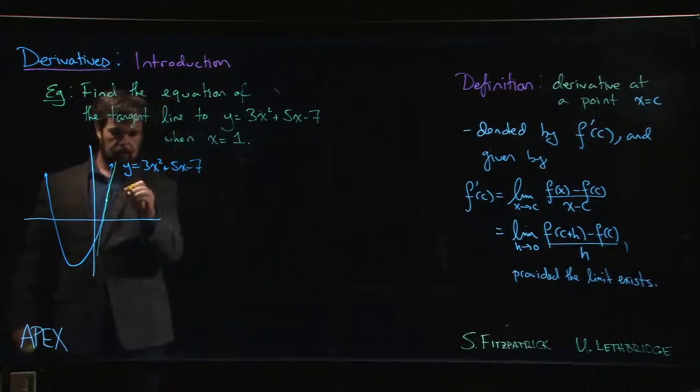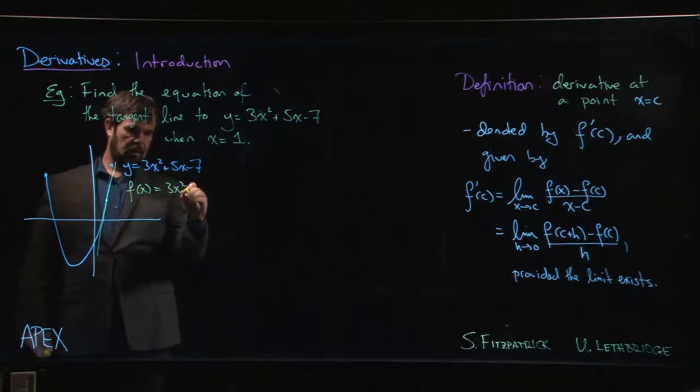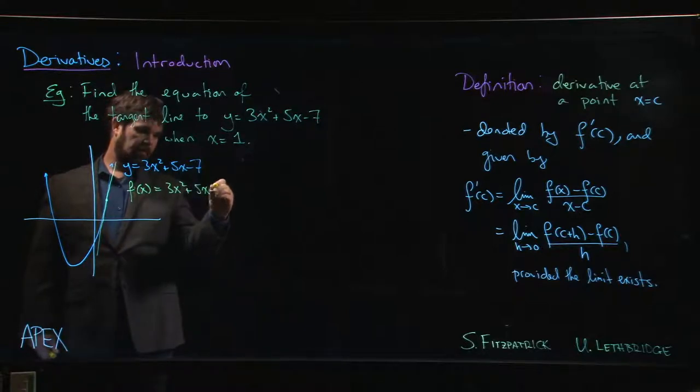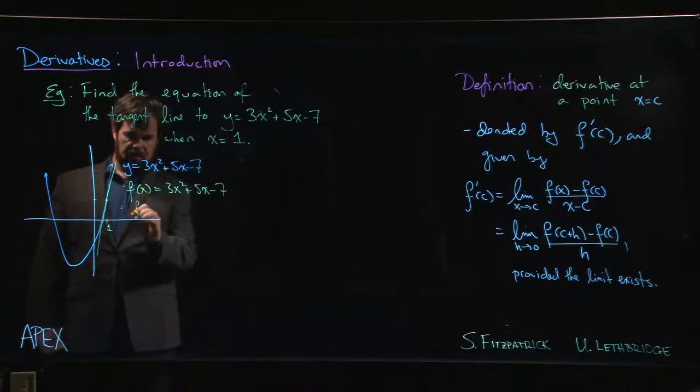In this case, our function, let's call it f of x, is 3x squared plus 5x plus 7, and we want this point. So we know that the x value is 1, we want the corresponding y value, so that y value is simply f of 1.